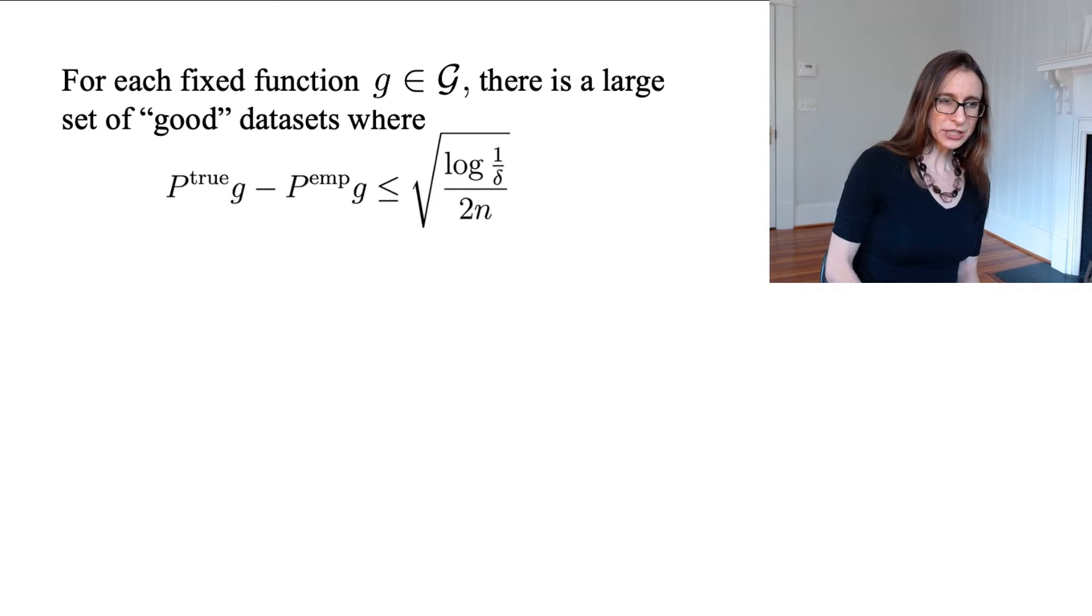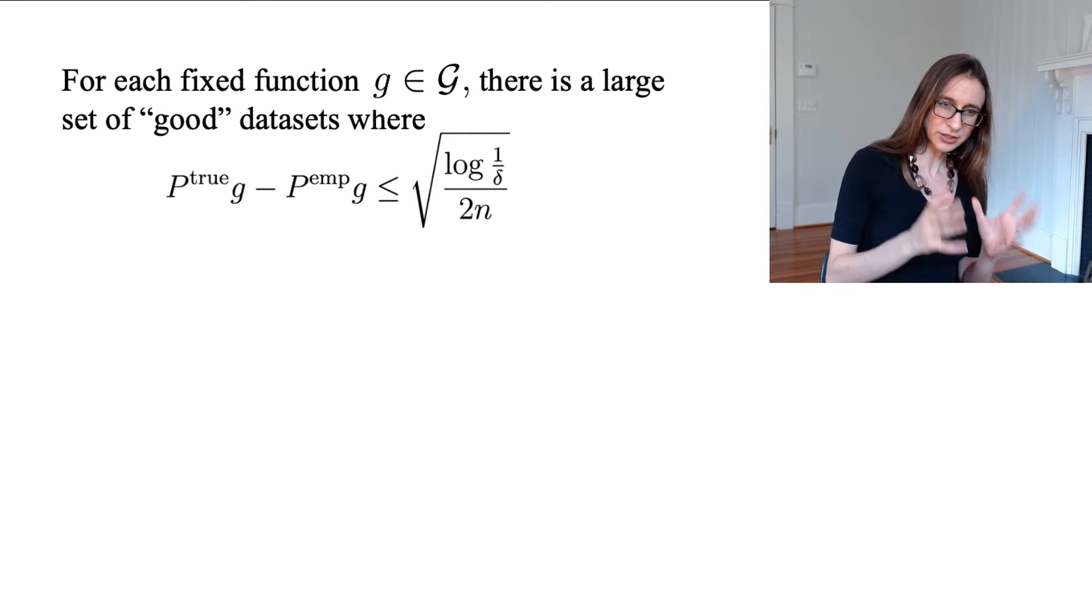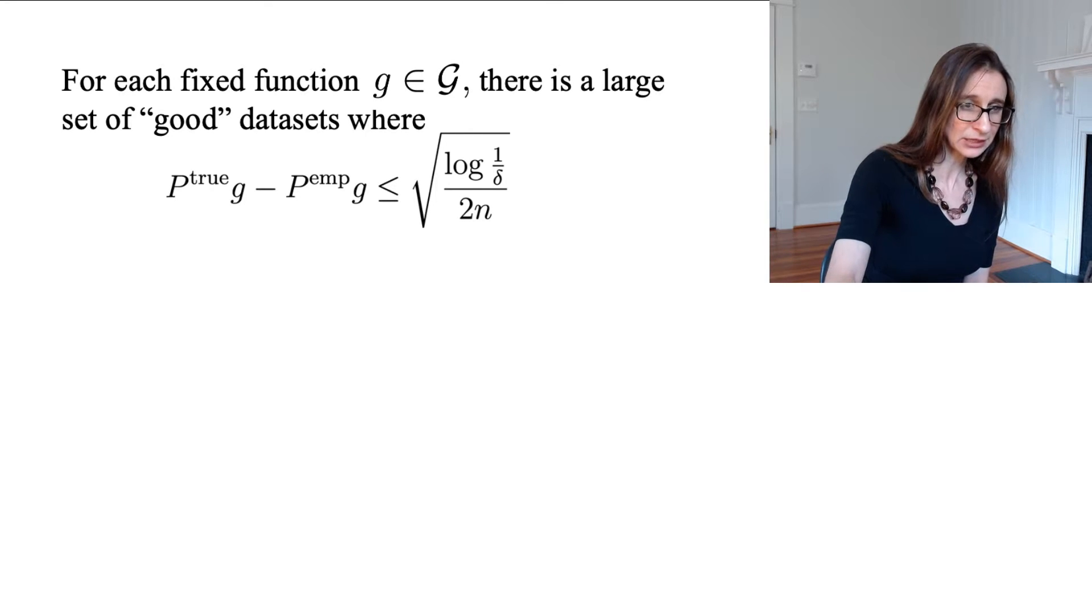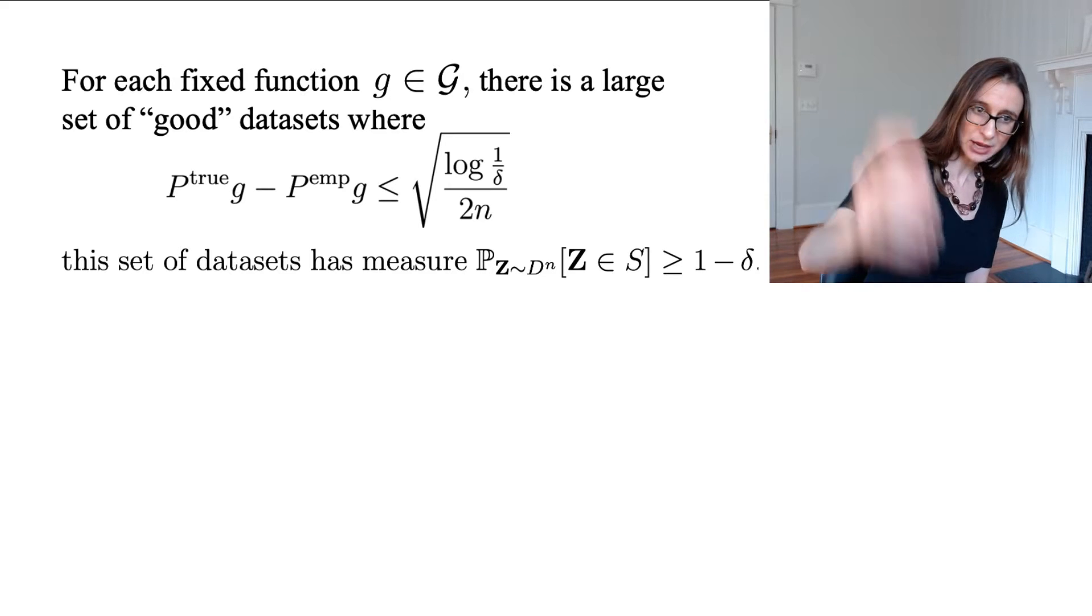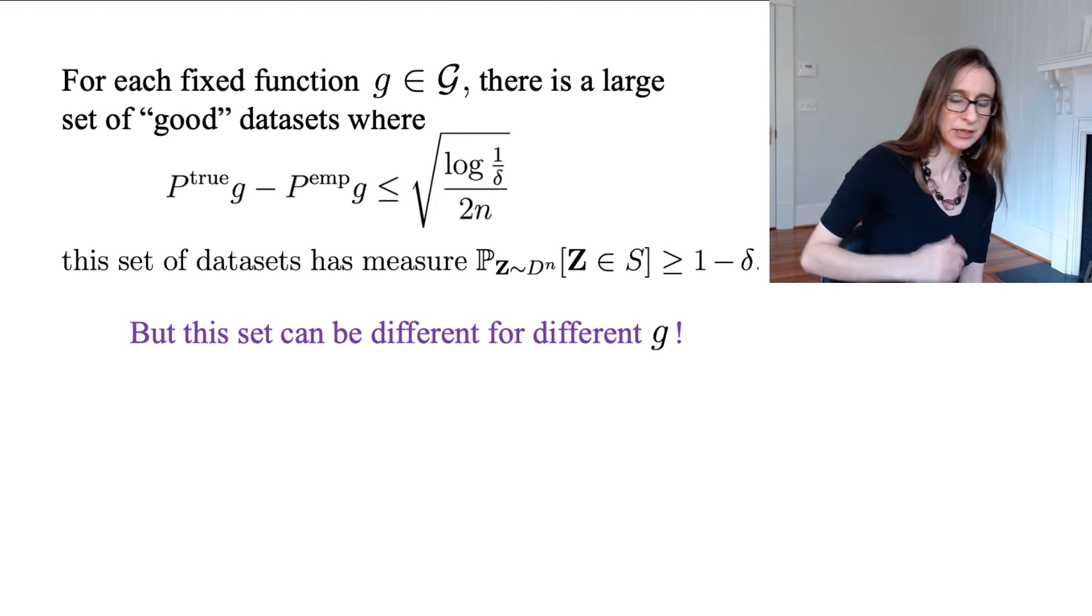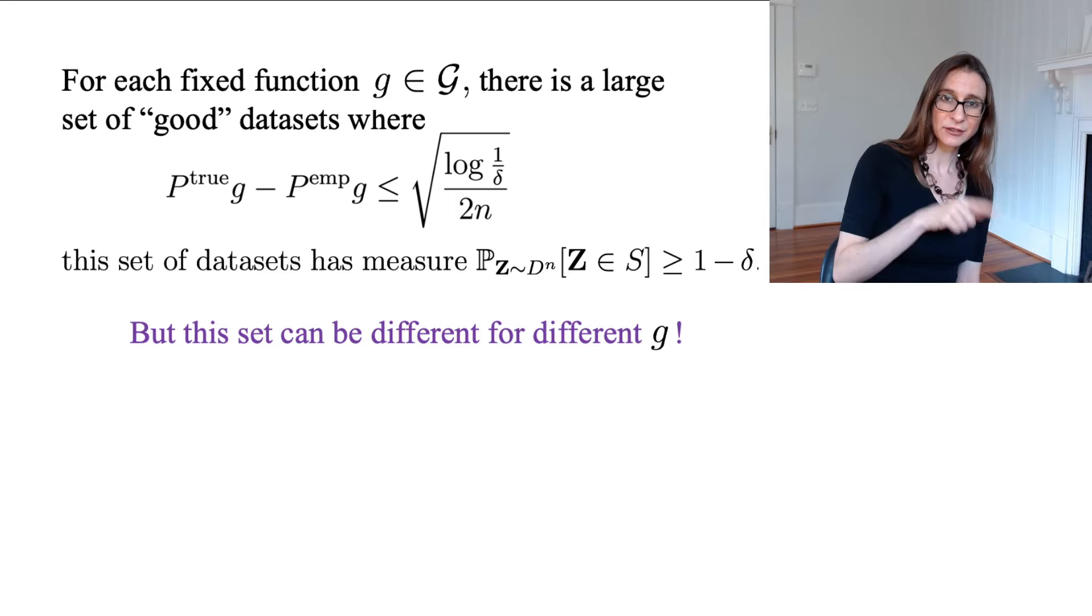So for each fixed function in the loss class, there's a set of good data sets. And those good data sets, the true risk is not that much worse than the empirical risk. However, this set of data sets, it's good, it has high probability, but it can be different for different g. So if you pick a different function g, there's a different set of data sets for which the true risk and empirical risk are close. Why does that matter?